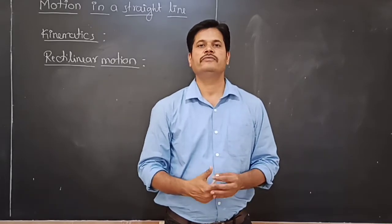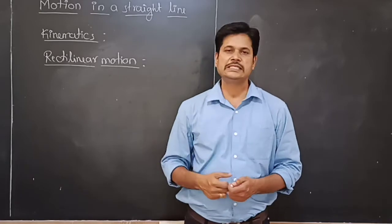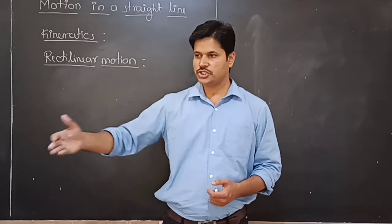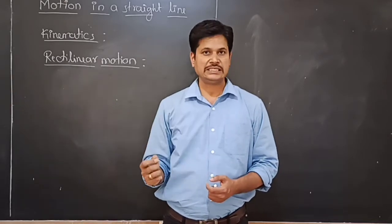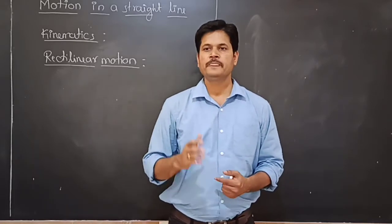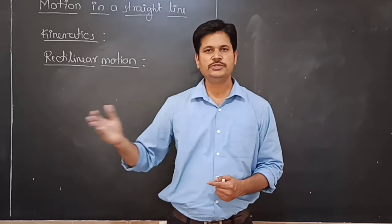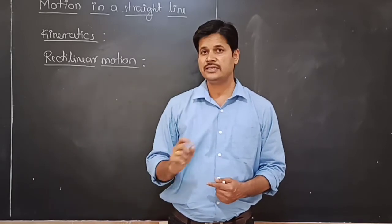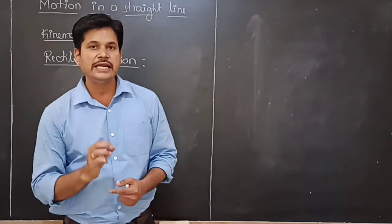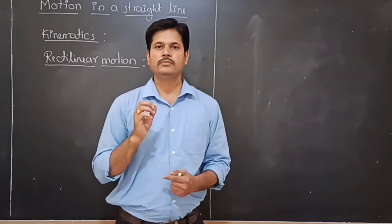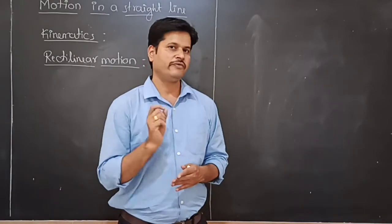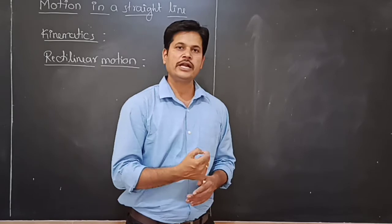We use a coordinate system to find out the position of the object with respect to time. If the position is changing, we can say that the object is moving. If the position of the object keeps changing with respect to time, the object is moving. There are three types of motions, and to find out the motions we require a coordinate system.